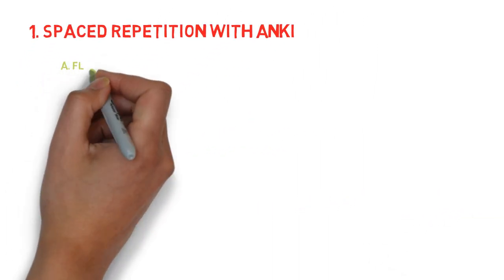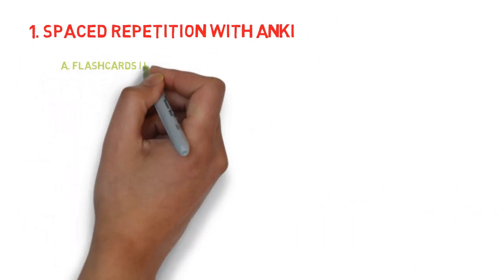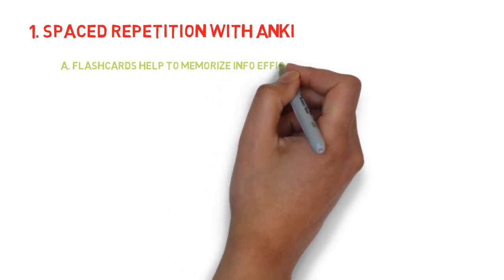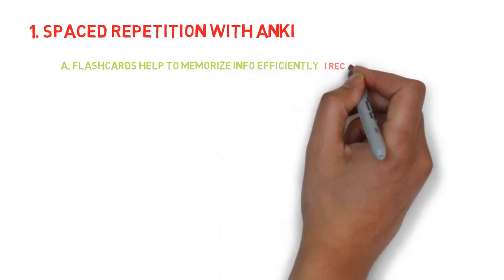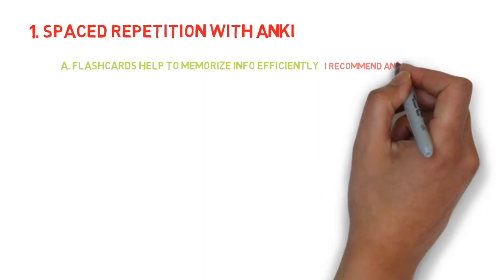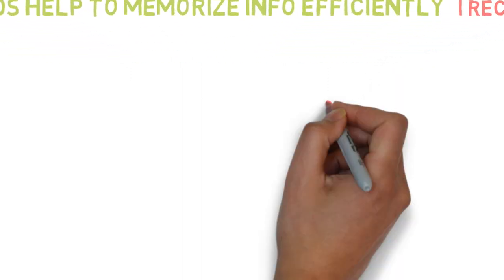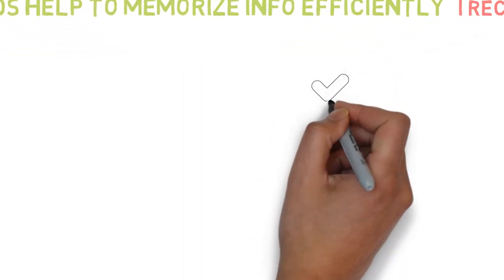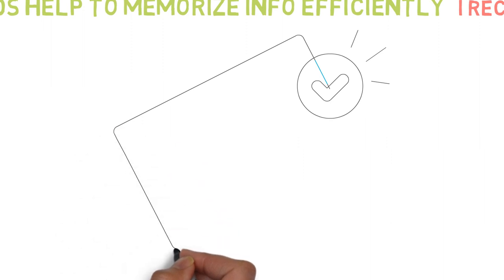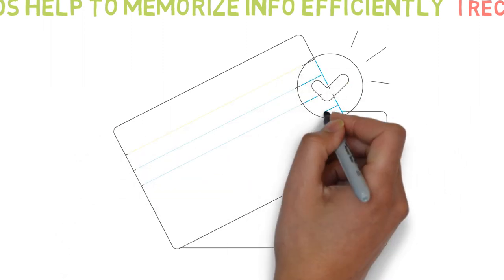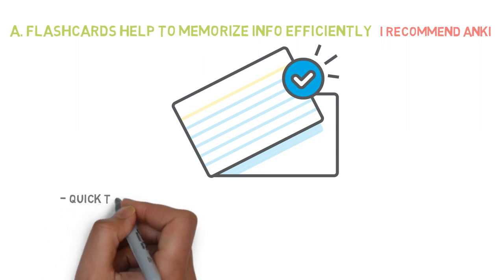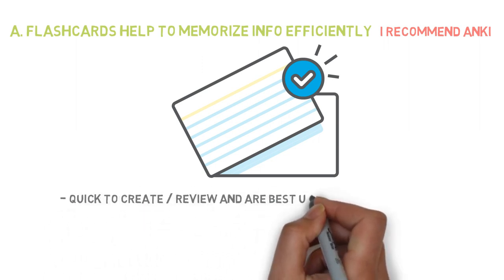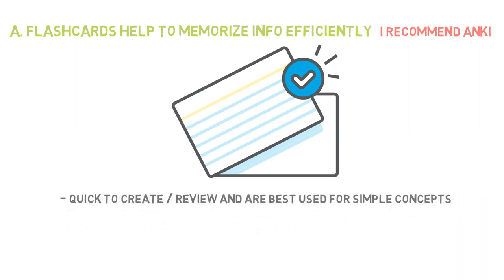First, doing flashcards. As you guys already know, I'm a huge fan of Anki for memorizing information efficiently. Most of the information I try to memorize I actually just place in Anki as a regular flashcard — either a cloze deletion, a simple card, or image occlusion, etc. These are quick to make, quick to review, and they work best for simple concepts. This should be your primary method of memorizing information.